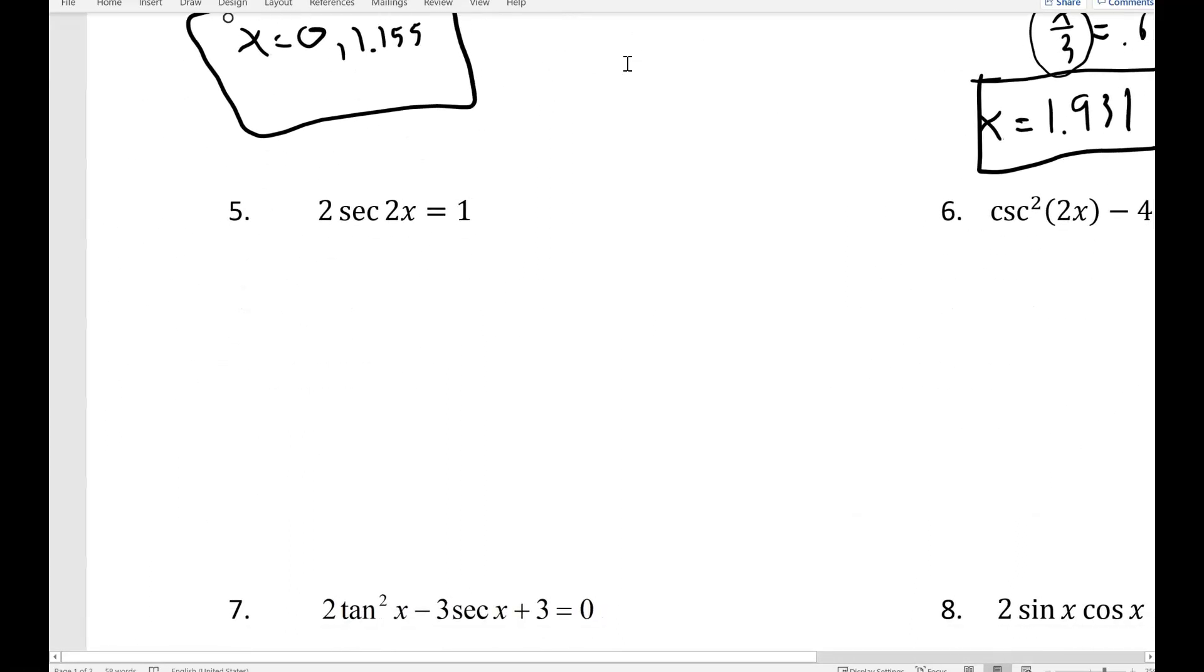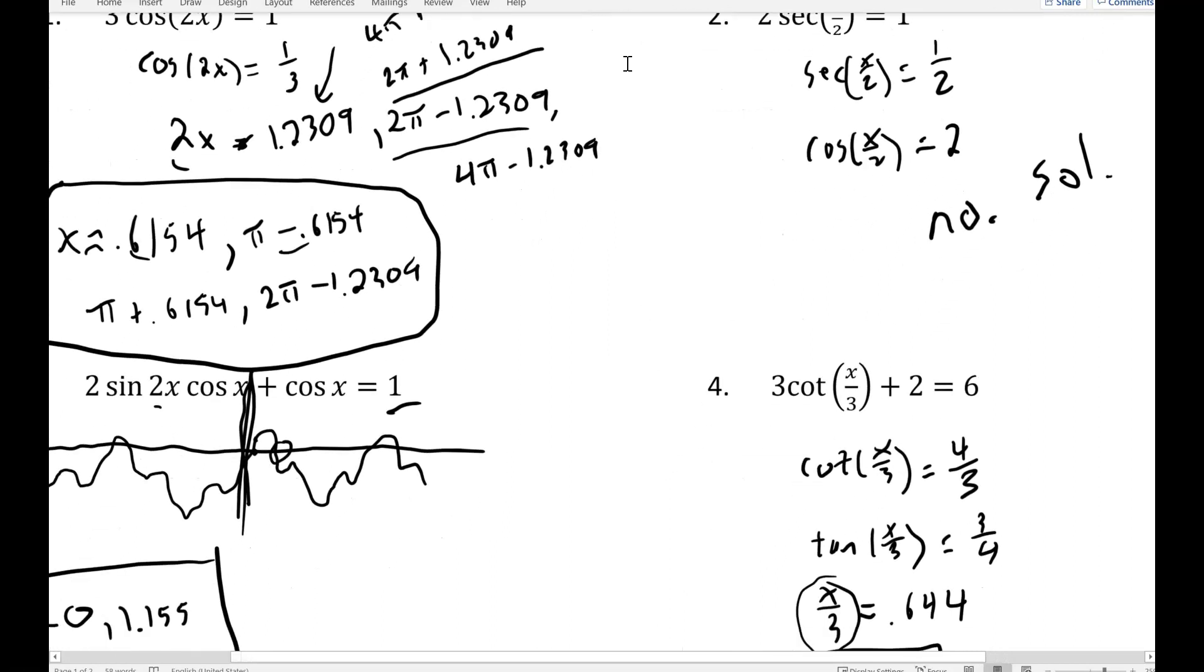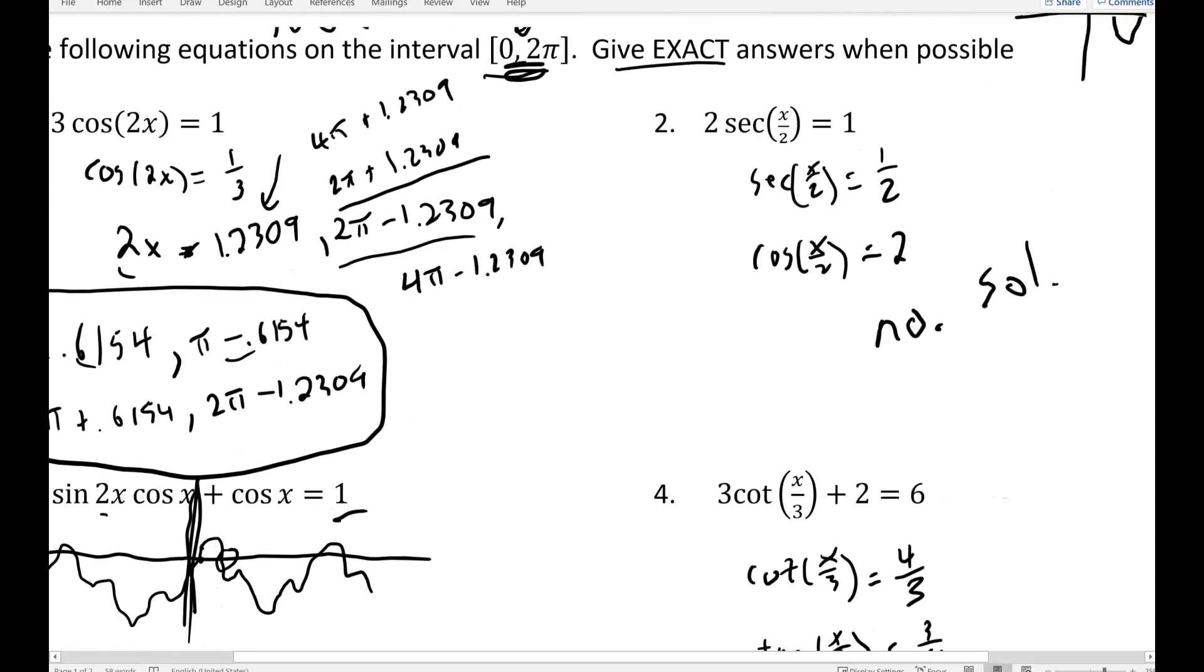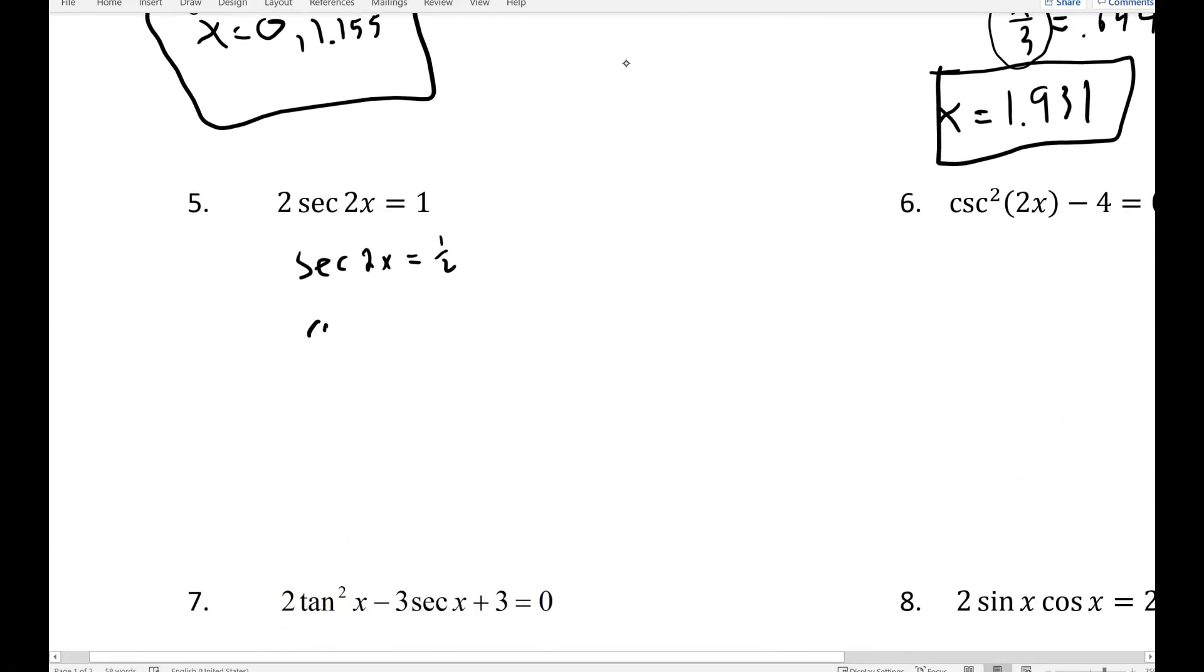Let's do number 5. 2 secant 2x. So I divide both sides by 2, and I get secant 2x equals 1 half. Hey, that's the same problem I just did, isn't it? It's a 2 inside instead of 1 half, but it's the same issue because that means that cosine of 2x is equal to 2, and that's impossible. So no solution.